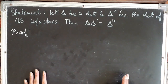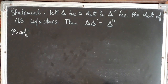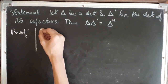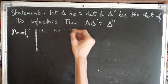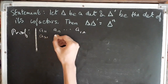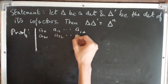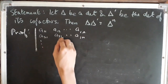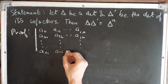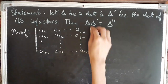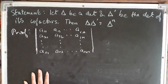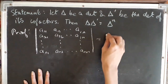Let us prove this. Firstly, let us take a determinant of the nth order: a11, a12, ... a1n; a21, a22, ... a2n; and similarly proceeding, an1, an2, ... ann. This is the nth order determinant, and suppose it is equal to delta.